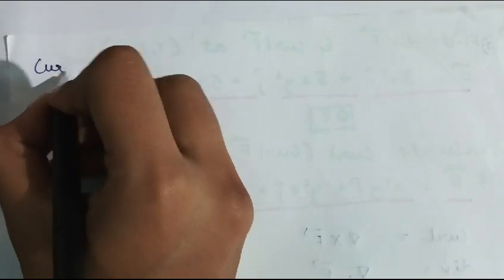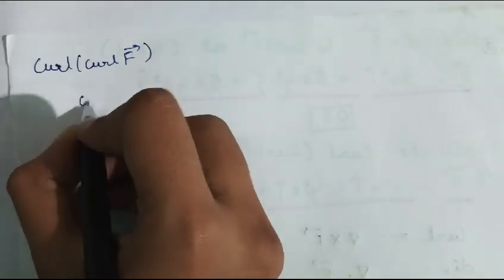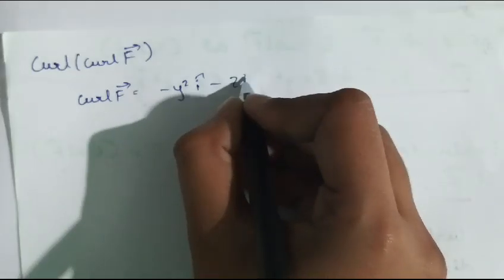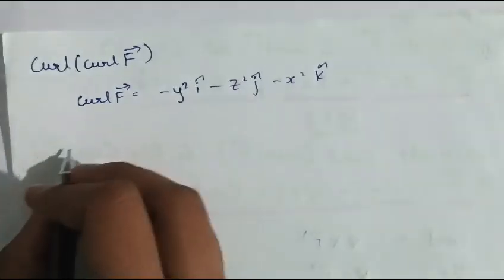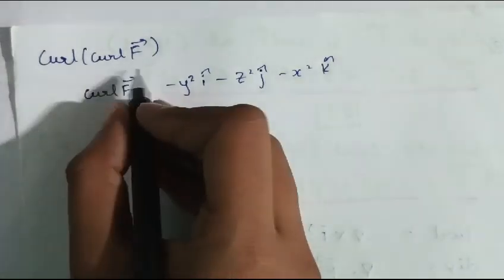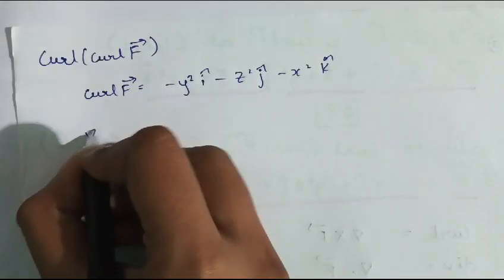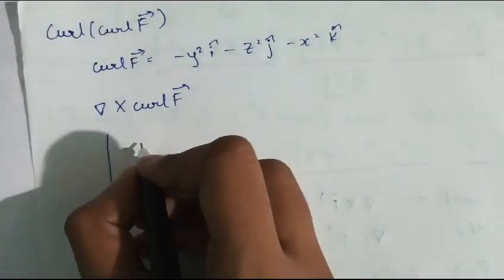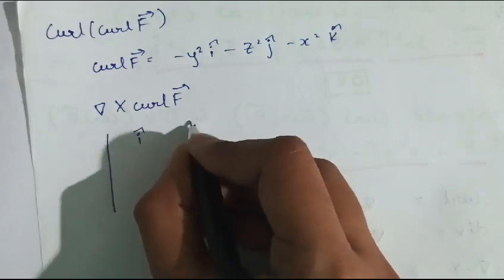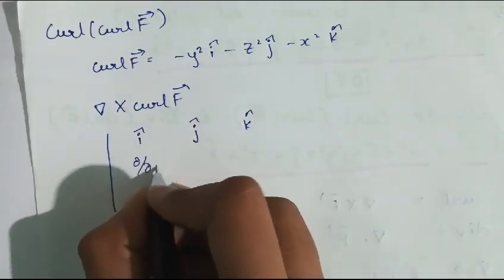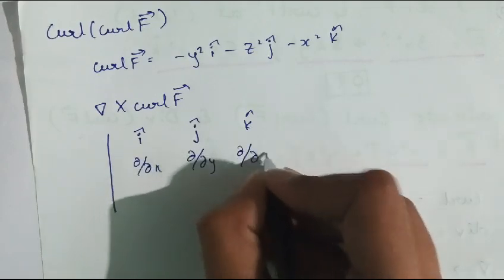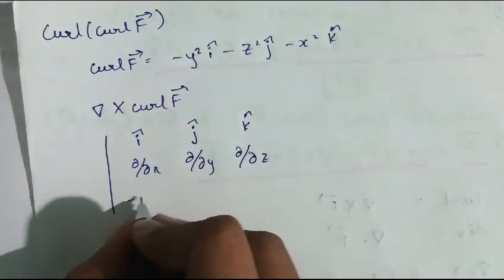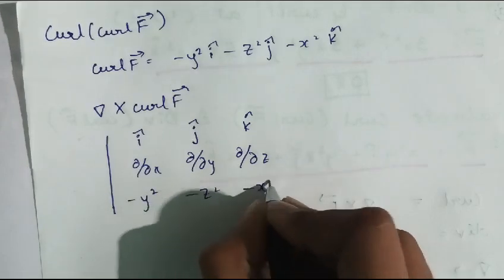Now we need to find curl of curl of f. We already found that curl of f = -y²î - z²ĵ - x²k̂. To find curl of curl f, we again use the determinant method with î, ĵ, k̂ in the first row; ∂/∂x, ∂/∂y, ∂/∂z in the second row; and the coefficients -y², -z², -x² in the third row.